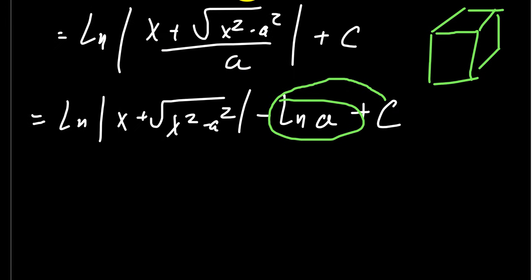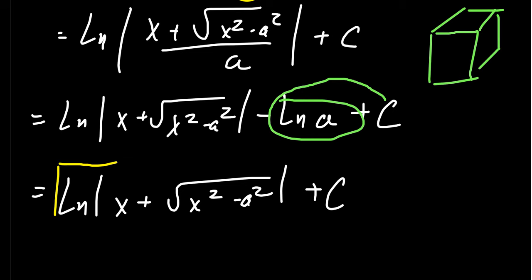And so we can actually simplify our antiderivative form as the natural log of the absolute value of x plus the square root of x squared minus a squared plus our gelatinous cube, a.k.a. plus c. And so this gives us a simplified antiderivative that's a lot cleaner than the previous one.